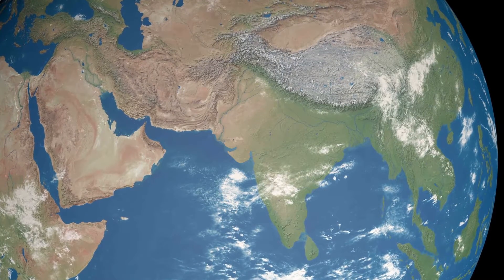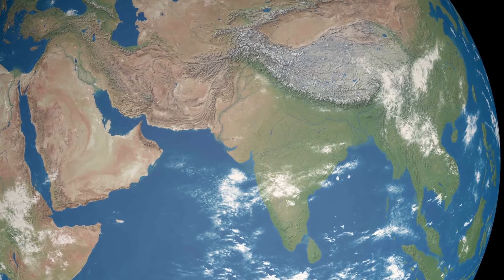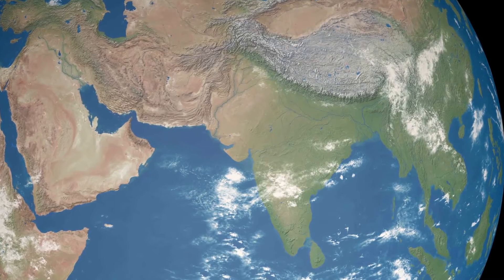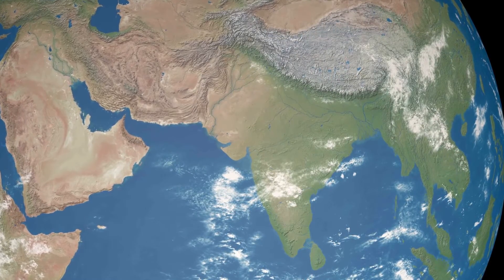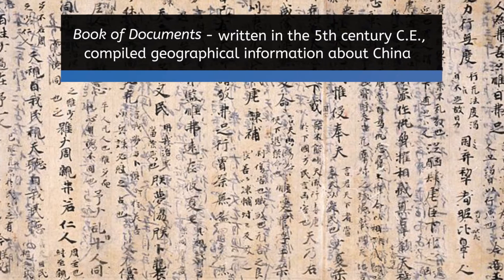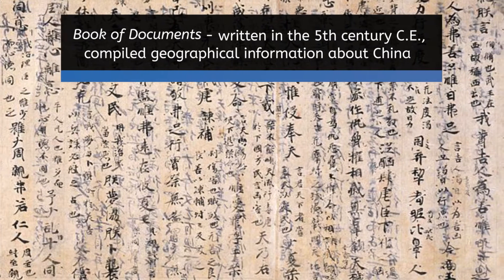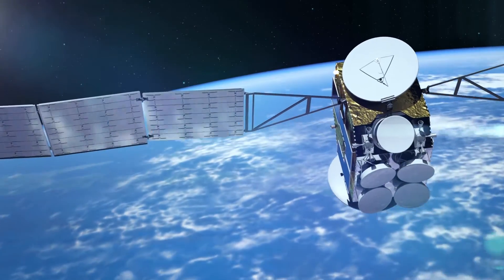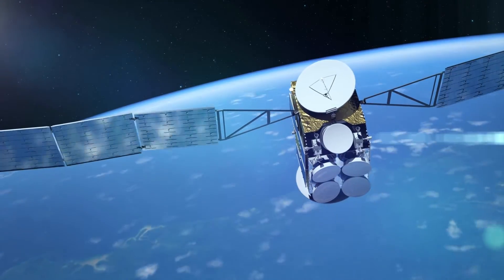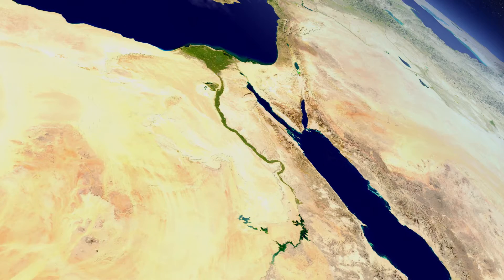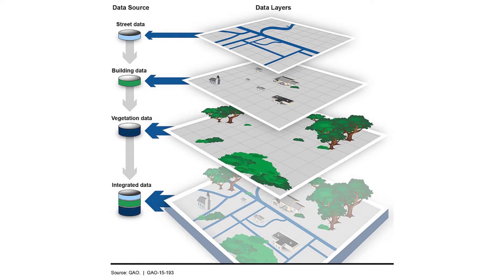Scholars of ancient India proposed theories about the makeup of the Earth's crust, and by the 4th century CE, Indian geographers were compiling written descriptions of the people, regions, and climates of the territory where they lived and traveled. In China, geographers compiled a book of documents as early as the 5th century BCE that described the rivers, lakes, soil, and goods produced in the nine provinces of ancient China. These, and the more modern tools we learned about previously, are used to compile data that helps paint detailed, colorful pictures of our changing world. No matter what form that picture takes, whether it's a satellite image or GIS visualization, it's really just a map.